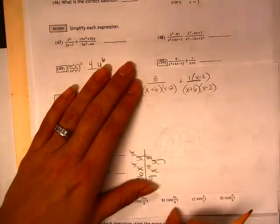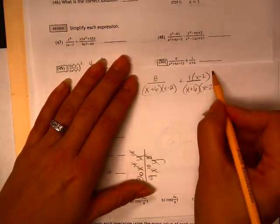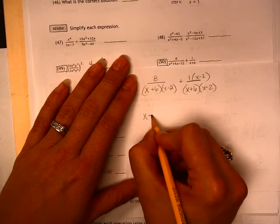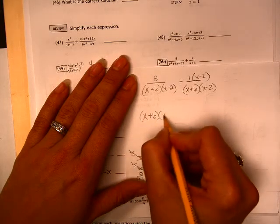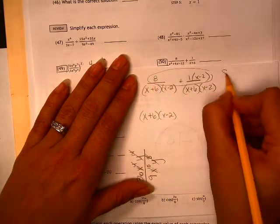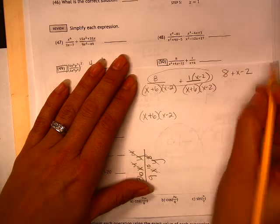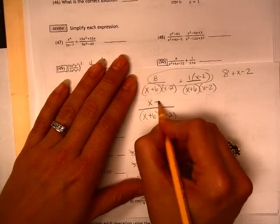So I need to have an x minus 2 over here. So I'm going to go ahead and do my multiplication. And the denominator is the same. But my numerator, I need to combine that. So that says 8 plus x minus 2, which is x plus 6.